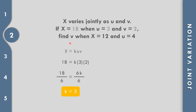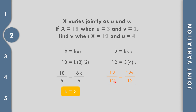Next, find v when x equals 12 and u equals 4. Substituting with k equals 3: 12 equals 3 times 4 times v, which gives 12 equals 12v. Dividing both sides by 12, we get v equals 1. So the value of v is 1.